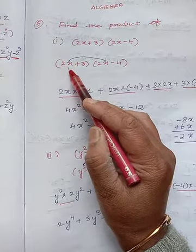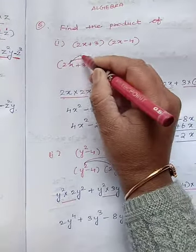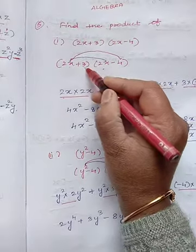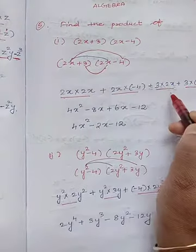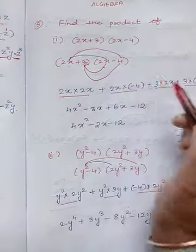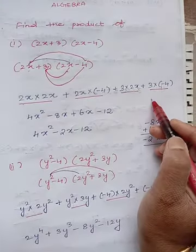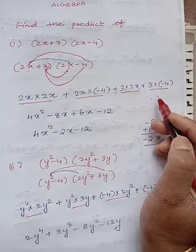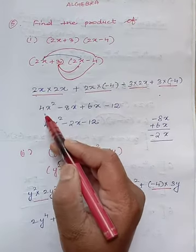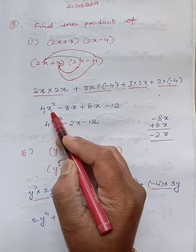First we will multiply 2x into 2x. Next we will multiply 2x into minus 4. Next 3 into 2x, and 3 into minus 4. So one by one we will solve it. Now first we will multiply the numbers: 2 twos are 4, x into x is x square.